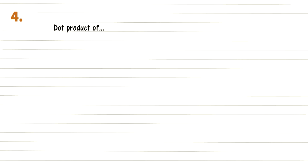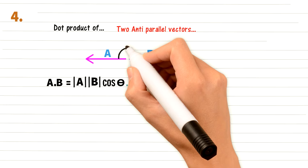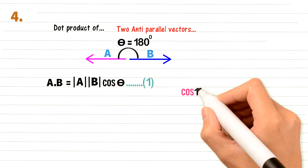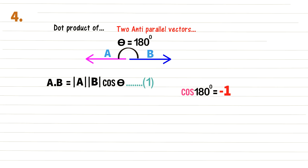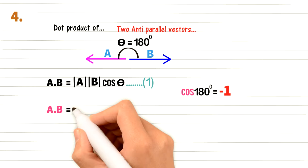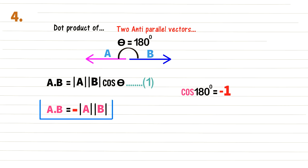For two antiparallel vectors A and B: again, A·B = |A||B| cos θ. The angle between two antiparallel vectors is 180°, and cos 180° = −1, so the equation becomes A·B = −|A||B|. The dot product of two antiparallel vectors equals the negative of the product of their magnitudes.